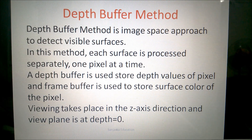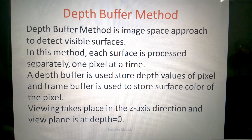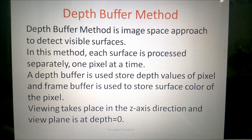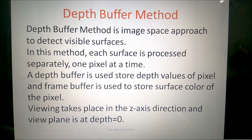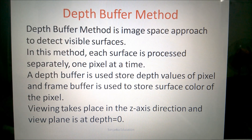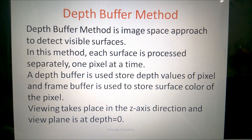The Depth Buffer method is an image space approach to detect visible surfaces. There may be multiple surfaces, and each surface is processed separately, one pixel at a time. In this method, a depth buffer is used to store the depth values of the pixel, and the frame buffer is used to store the surface color of the pixel.